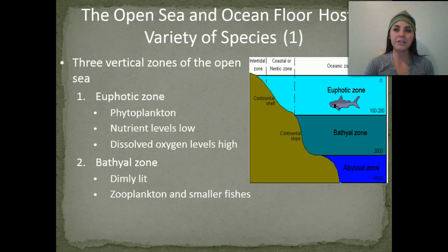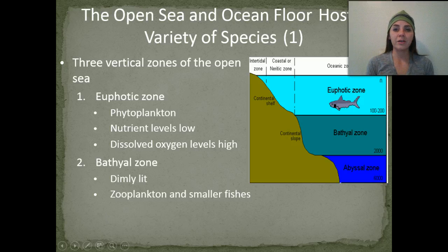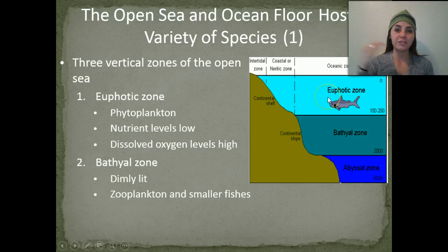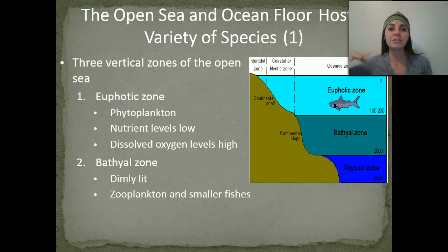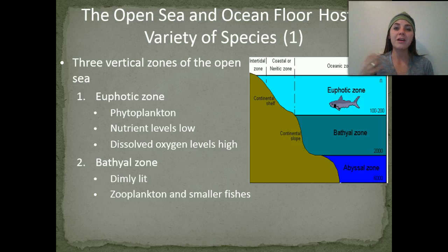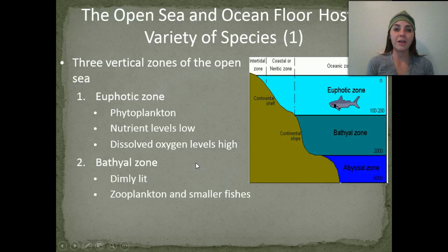The open sea and the ocean floor host a large variety of species. We have three main vertical zones in the open sea. In our euphotic zone, sunlight penetrates, so you're going to see a lot of phytoplankton. Phyto means plant, and plankton are little creatures that float and basically go with the flow of the ocean currents because they're not strong swimmers. Here, nutrient levels are low and dissolved oxygen content levels are going to be high.